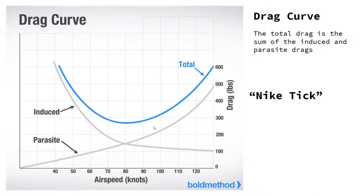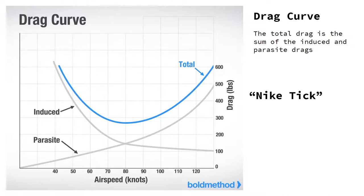The drag component is composed of two things, and it's right on the screen: induced and parasite. Induced drag is not as obvious as you would think — it's essentially the drag experienced by the very act of creating lift. Parasite drag is what you would think: it's the air's resistance to motion, so as you fly through the air, the air pushes back against you. That's parasite drag. Together, they form the Nike tick.